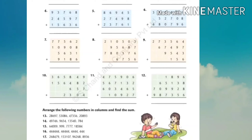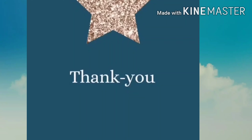इसी तरीके से question 1 से 12 तक के questions को अपने book में carefully solve करोगे। Question 13 से 19 तक के questions को homework copy में solve करोगे। दिये हुए numbers को column में arrange करेंगे - ones, tens, hundreds, thousands और ten thousands के column में - फिर ones के place से addition start करेंगे carry के साथ।